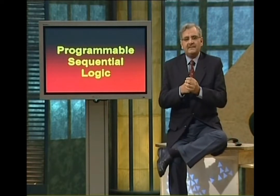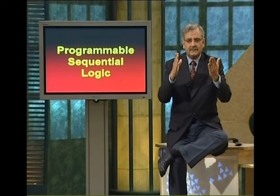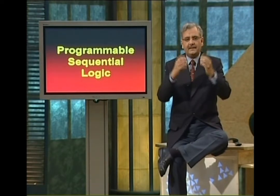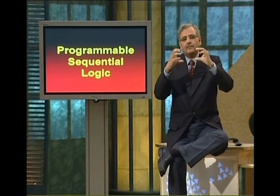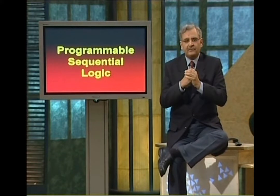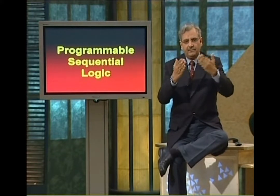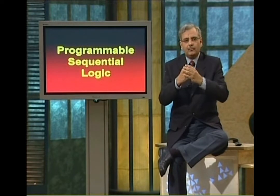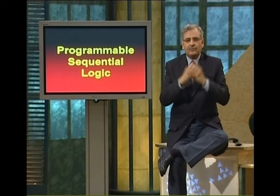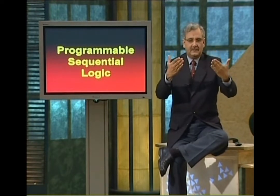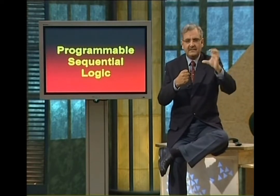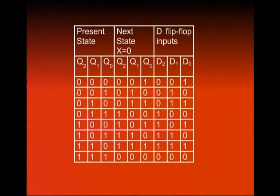Shuru mein basically hum baat karenge teen D flip-flops ki instead of JK flip-flops. Yeh circuit jo eventually banega, woh thoda complicated hoga agar aap ise compare karein JK-based implementation pe, kyunki JK flip-flop ke do inputs the jabke D flip-flop ka ek input hai. Toh extra combinational circuit aapko nazar aayega. Aaye dekhte hain pehle input tables for D flip-flop, uske baad K-maps dekhte hain, equations dekhte hain, aur circuit diagram mein dekhte hain.